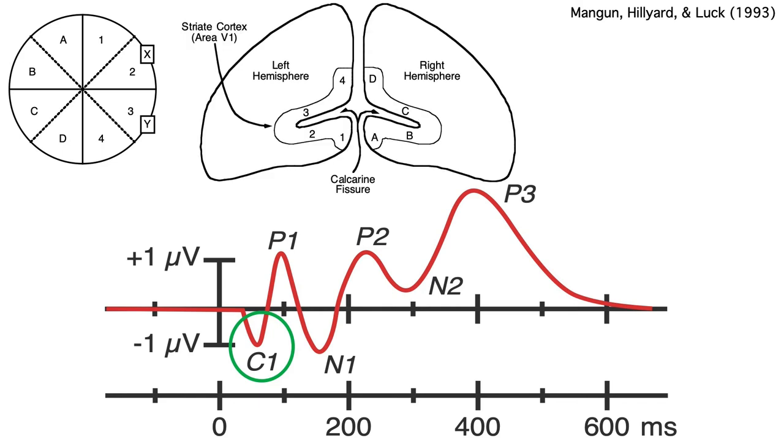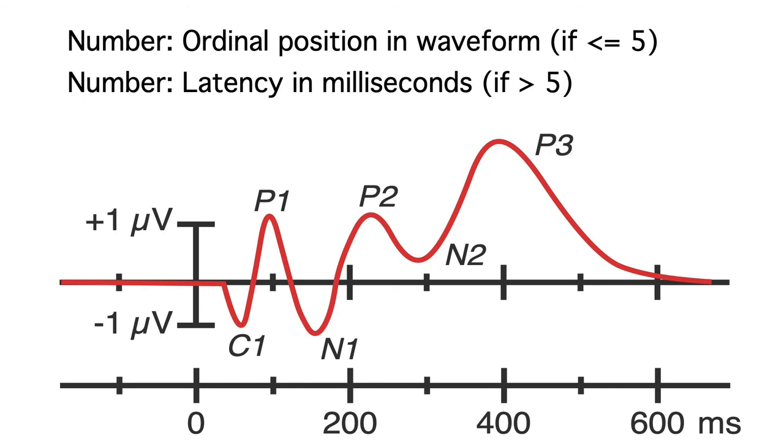This is because primary visual cortex is folded up in the calcarin fissure, and the upper and lower visual fields project to opposite sides of the fissure. This flips the polarity of the dipole for stimuli in the lower field relative to stimuli in the upper field, giving us opposite c1 polarities at our scalp electrode. The number in a component label can also be confusing.